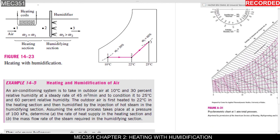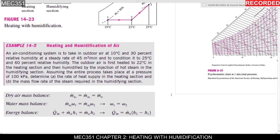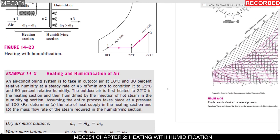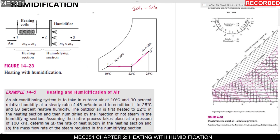An air conditioning system is to take in outdoor air at 10 degrees Celsius. Make sure you try to draw this diagram if it comes out in test one, because this diagram will ease you in analyzing the process. The diagram shows air flowing from left to right — the left side is the intake and the right side is the outlet.